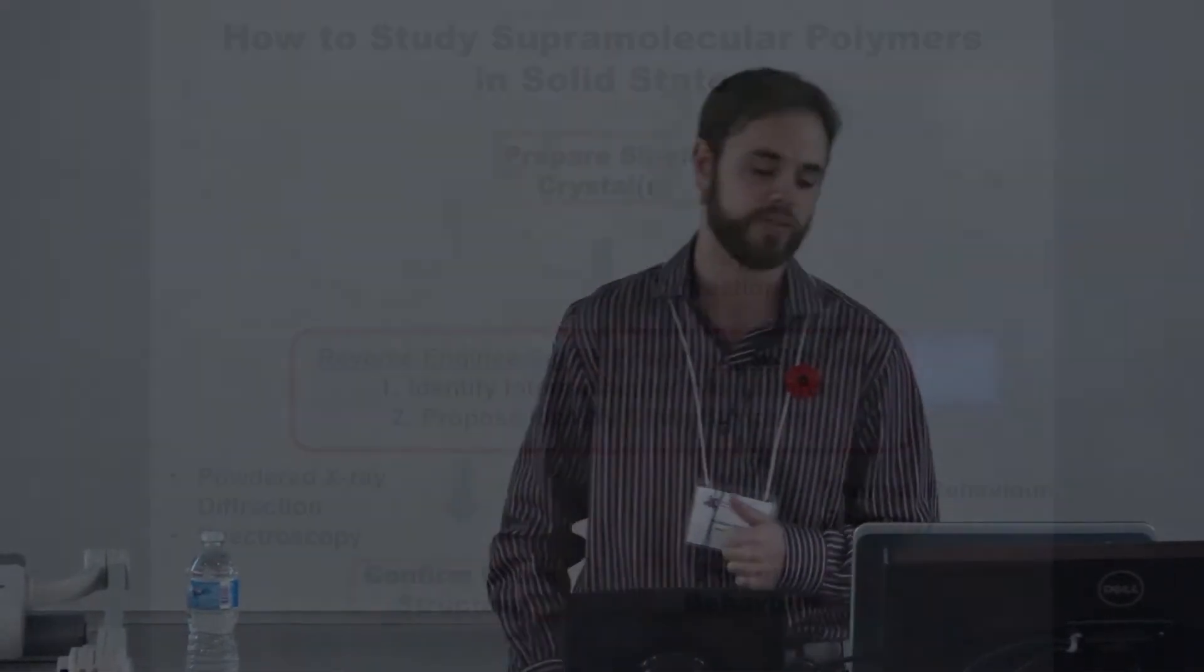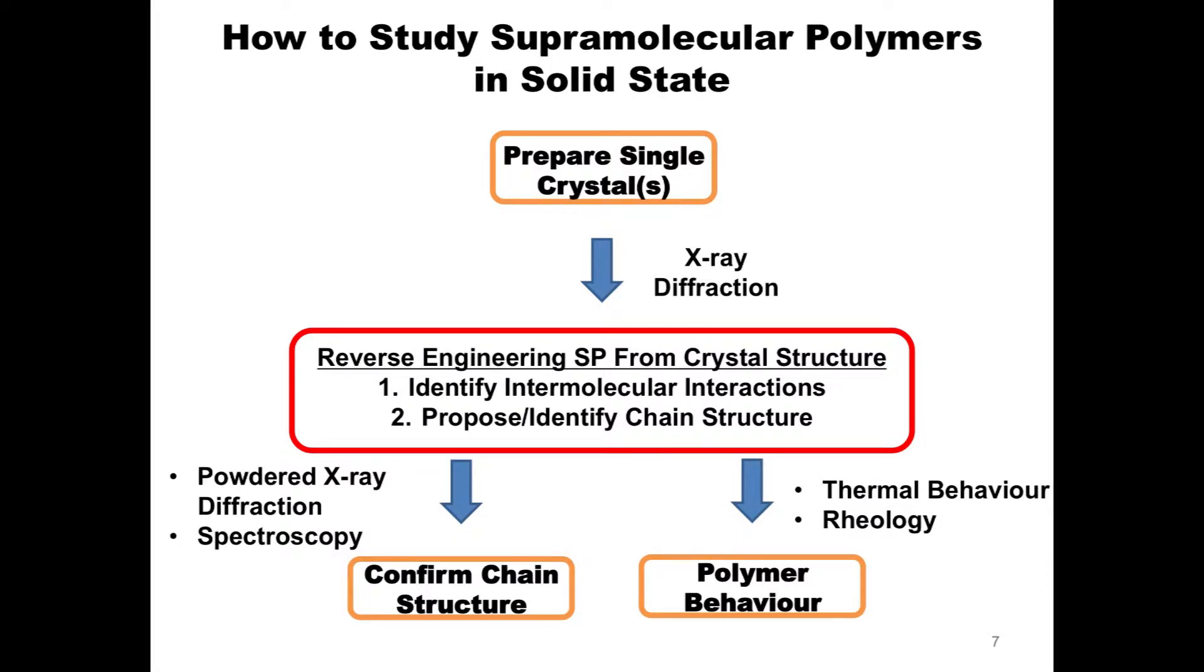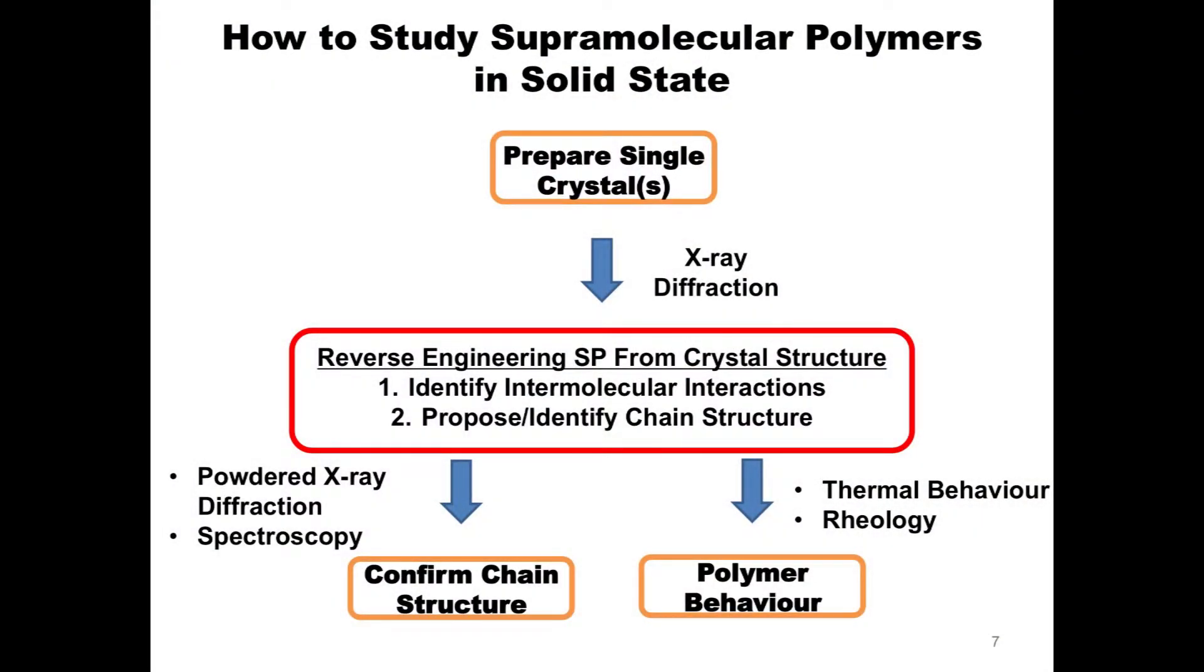So how do we study these things? That's actually a really great question, and it involves a lot of x-ray diffraction and single crystal work. The first step is we need to prepare single crystals. The next step is we need to solve the single crystal structure through x-ray diffraction, and that does two things. Once we solve the single crystal structure, using something called short contact analysis, we're able to identify the intermolecular interactions available to these molecules. Then what we can do is we can propose a chain structure, a way these molecules can associate in one dimension, or if we're really lucky, we can even identify a chain structure that might be responsible for polymeric behavior. Now the next step, because this is still in the single crystal, is we need to confirm that the chain structure we predict or observe in the single crystal is going to be responsible for the polymer behavior we observe outside of the single crystal in the amorphous state. So we use things like powder x-ray diffraction and different spectroscopic techniques to sort of solve that problem. We also need to confirm its polymer behavior because that's what we're trying to do. So we look at things like its thermal behavior and its rheology.